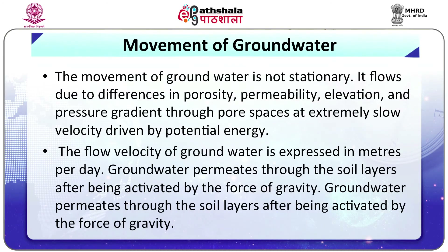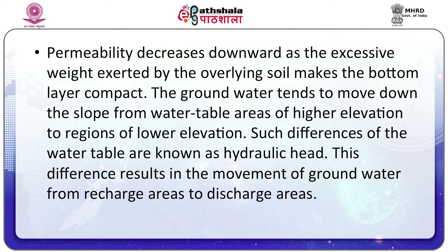In rocks with fractures, permeability is determined by the size of the openings, the degree of interconnectedness, and the amount of open space. The movement of groundwater is not stationary — it flows due to differences in porosity, permeability, elevation and pressure gradient through pore spaces at extremely low velocity, driven by potential energy. The flow velocity of groundwater is expressed in meters per day. Groundwater permeates through the soil layers after being activated by the force of gravity. Permeability decreases downward as the excessive weight exerted by the overlying soil makes the bottom layer compact. Groundwater tends to move down the slope from water table areas of higher elevation to regions of lower elevation; such differences in the water table are known as hydraulic head.